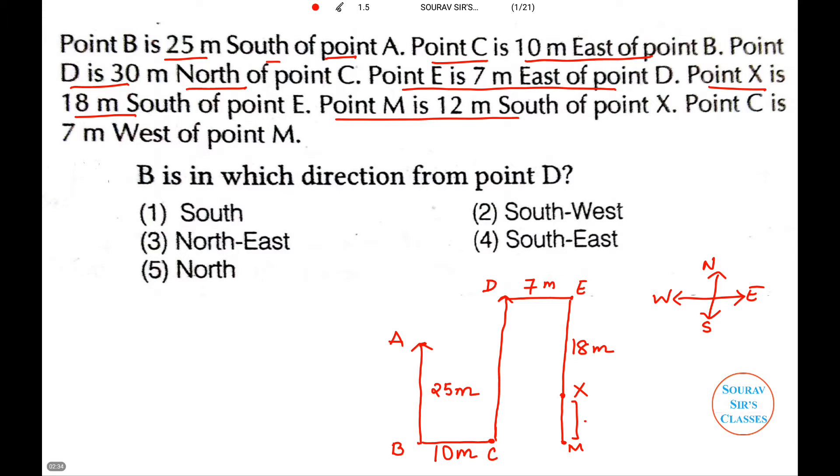And then point M is... Point C is 7 meters west, so west is this direction, so this is 7 meters.